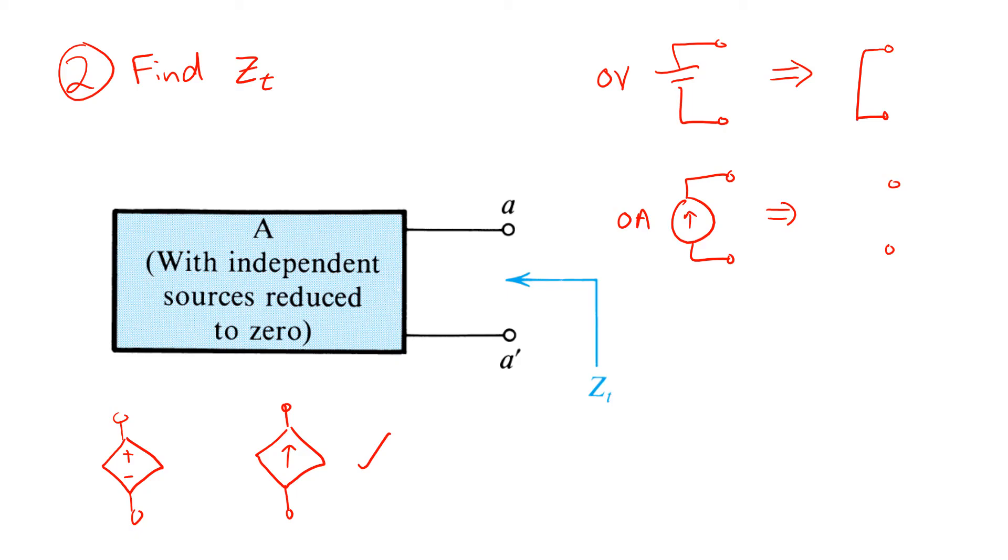Having done that replacement, we then apply a test source at the ports A and A prime. For example, a test voltage source Vx and find the resulting current Ix.